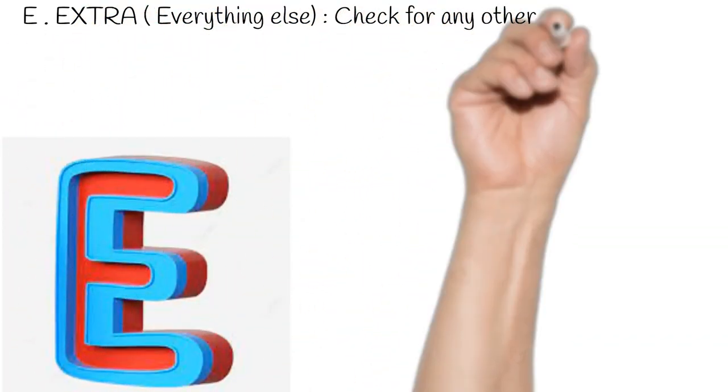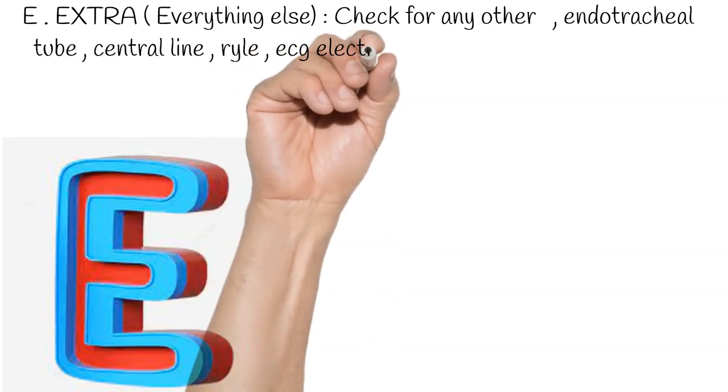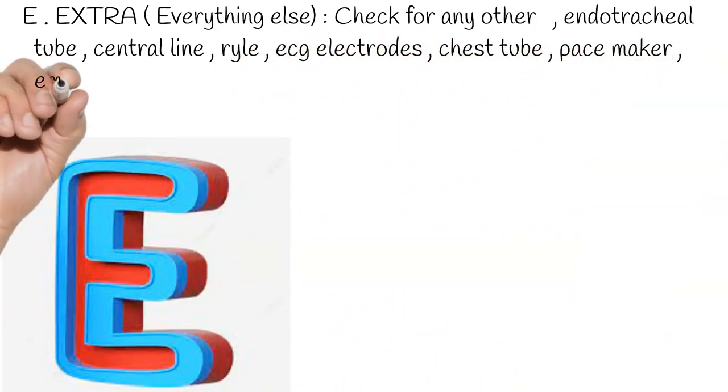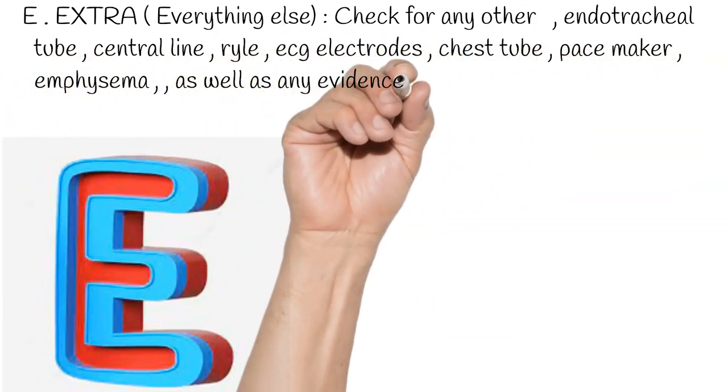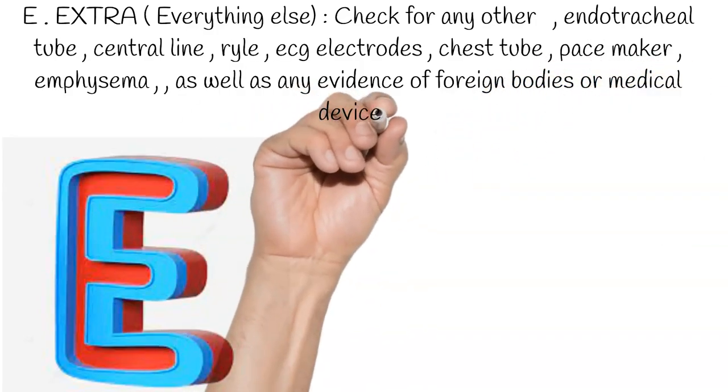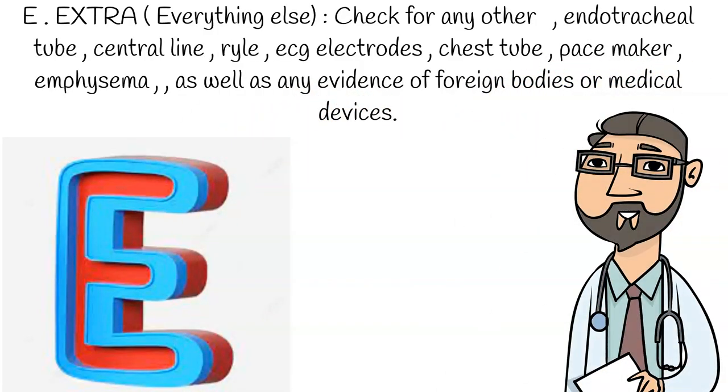E: Extra, everything else. Check for any other endotracheal tube, central line, ryle, electrodes, chest tube, pacemaker, emphysema, as well as any evidence of foreign bodies or medical devices.